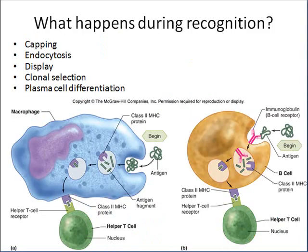During the recognition phase, B cells are located throughout the body, principally in places like Peyer's patches, lymph nodes, and other mucosal-associated lymphatic tissues. They are monitoring the fluid moving by them and what they're looking for is free antigens.